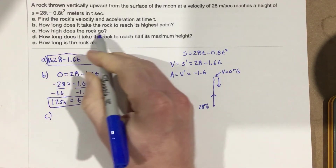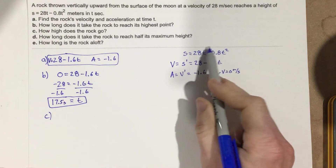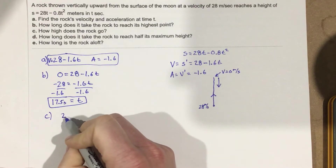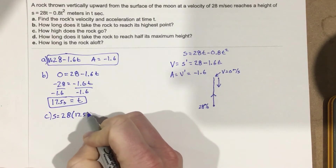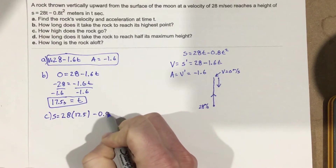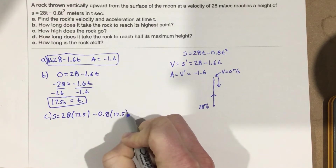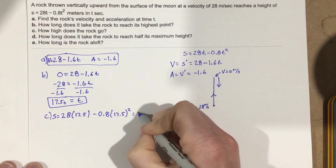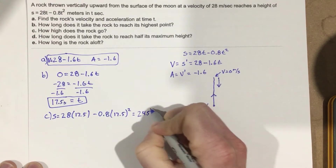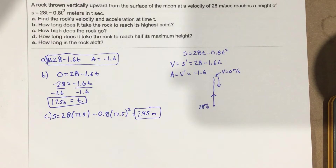Part C: How high does the rock go? Since it takes 17.5 seconds, we plug into the position equation: s equals 28 times 17.5 minus 0.8 times 17.5 squared. Computing that gives us 245. So the maximum height is 245 meters.